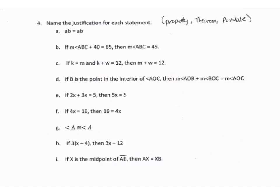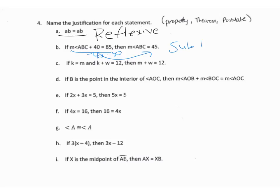Let's go through and see what property, theorem, or postulate describes each statement. If AB equals AB, it's the exact same thing on each side — that's the reflexive property. If the measure of angle ABC plus 40 equals 85, and the next line removes the 40, it looks like we subtracted 40 — so that's the subtraction property of equality.